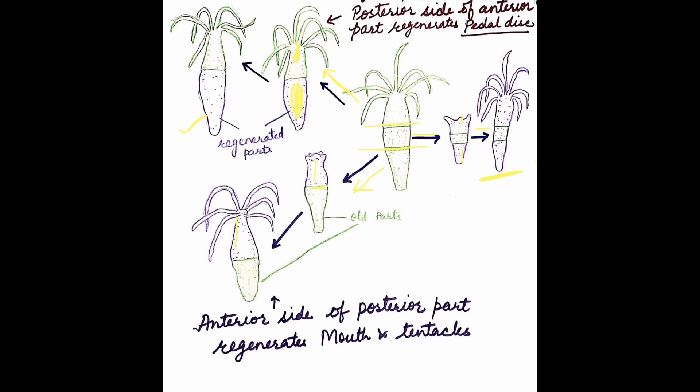Hydra is in a continuous state of physiological regeneration in which older cells are replaced by new cells through mitotic divisions of the interstitial cells present in the body of the hydra. This is called morpholytic regeneration.